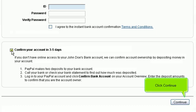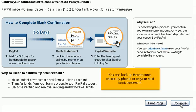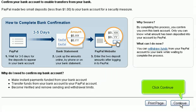Select 'Confirm your account in three to five days' and click Continue. PayPal has now made two small deposits to your bank account. It will take about three to five days for these deposits to appear. You can look up the amounts online, by phone, or on your next bank statement. Click Continue.